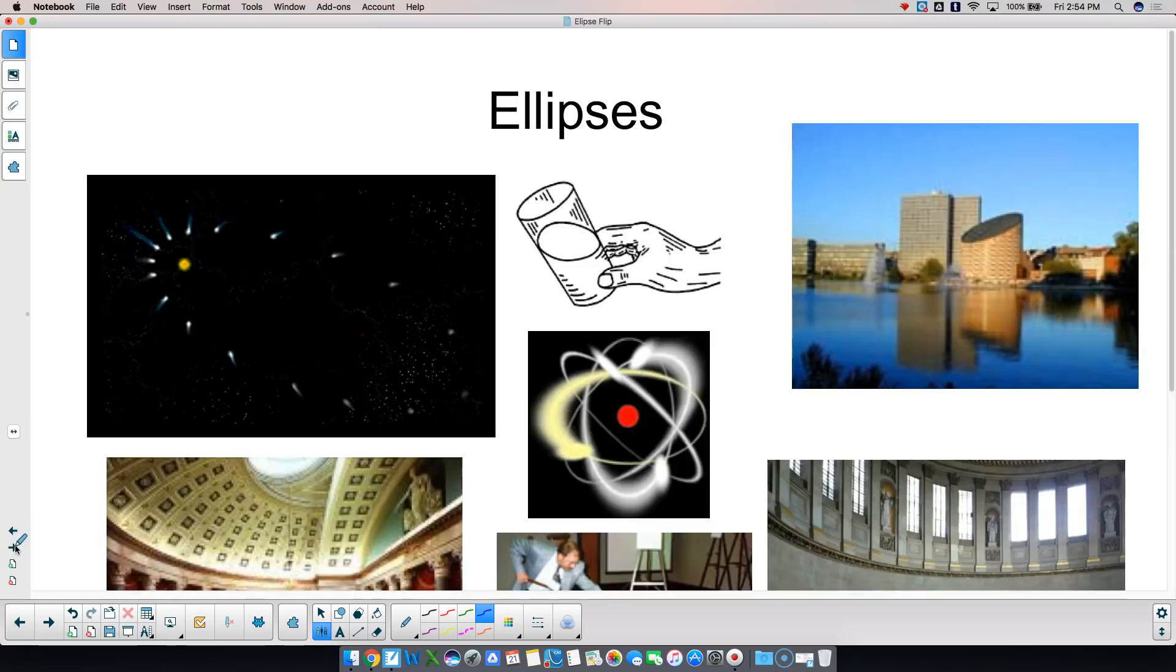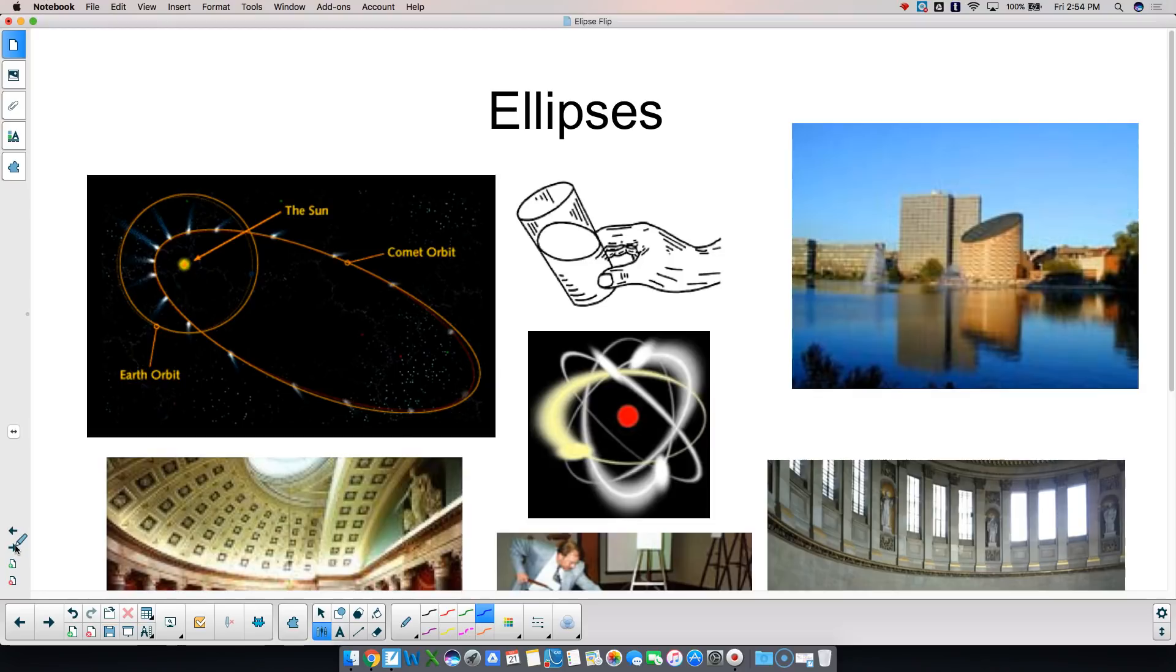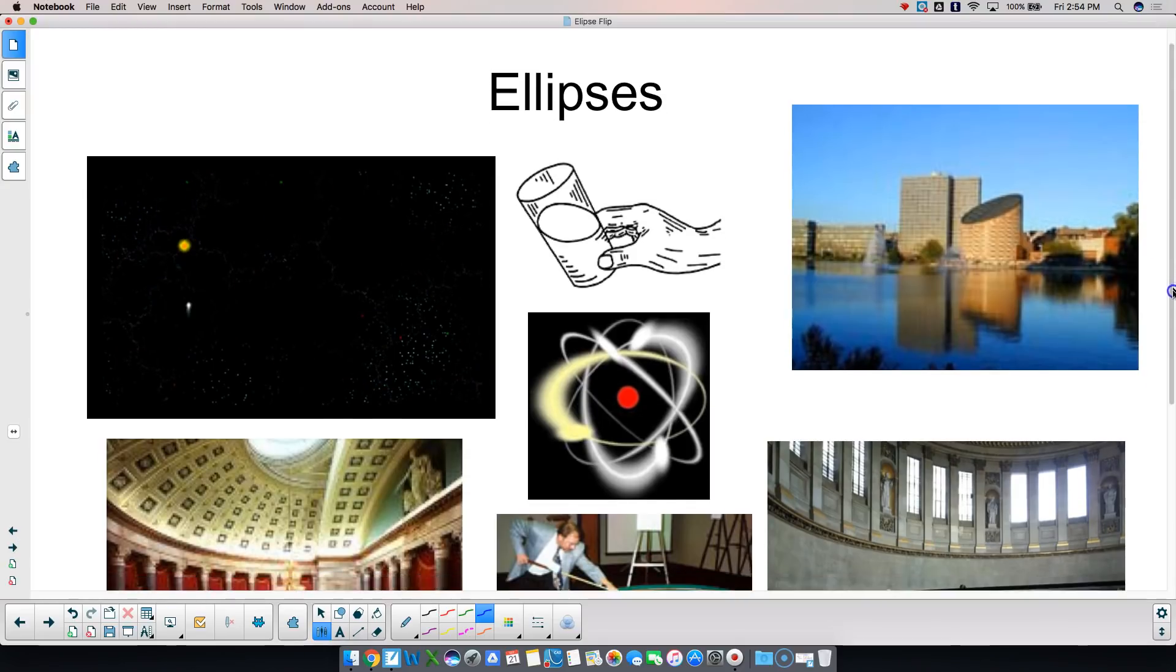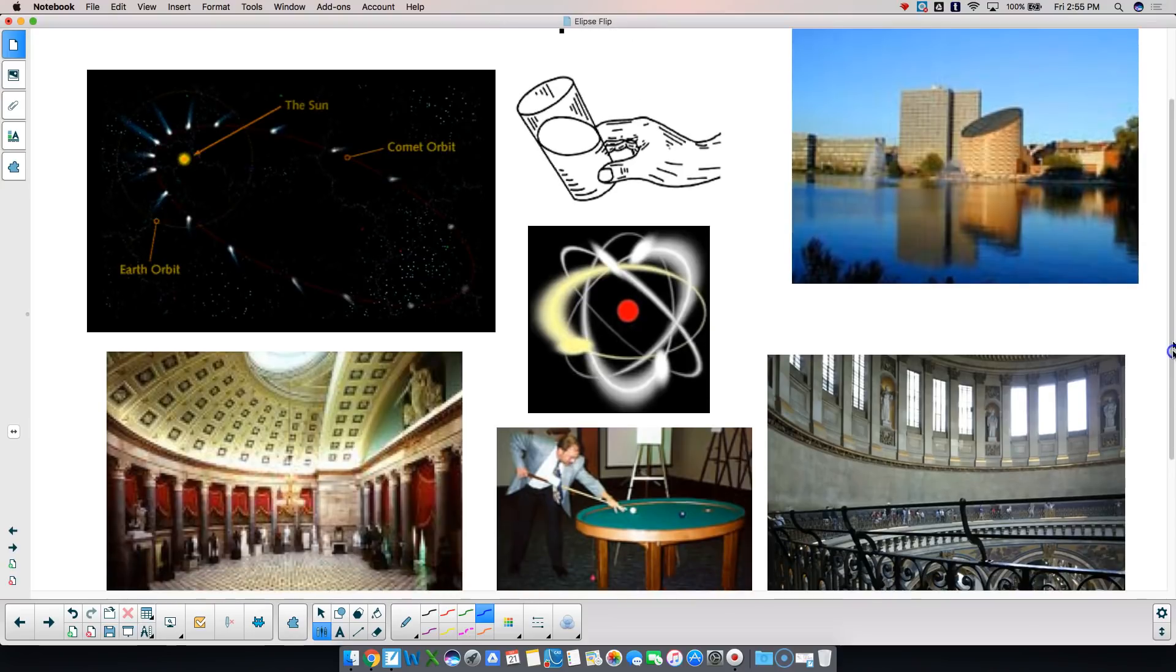There's a few real world practicalities of ellipses. Orbits in space are normally elliptical. Comets, planets, et cetera, those are usually elliptical. There are some buildings that are elliptical in shape on the outside. If you take a glass of water and you tip it to the side, it's an elliptical. Electrons go around an atom in elliptical shape.